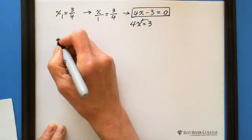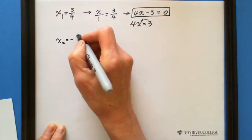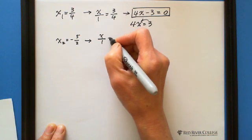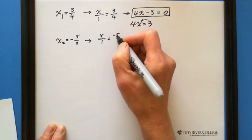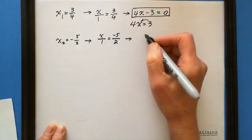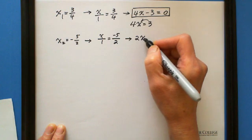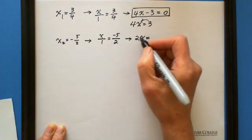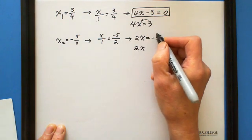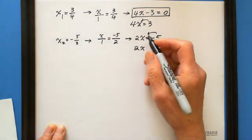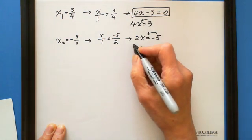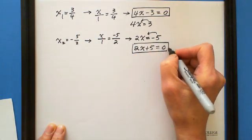The second one: x2 equals negative 5 over 2. We write x over 1 equals negative 5 over 2. Cross multiplication gives 2x equals negative 5. Move negative 5 to the left side: 2x plus 5 equals 0. This is the second factor.